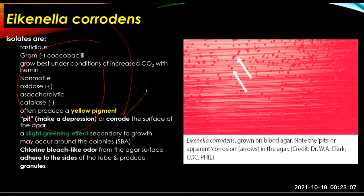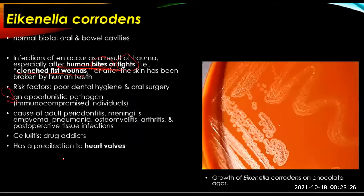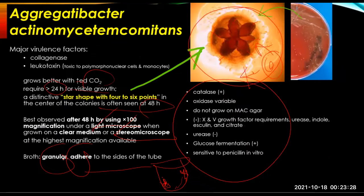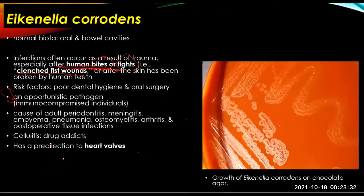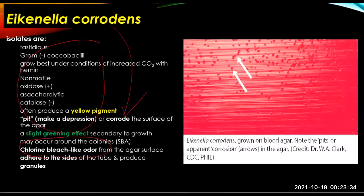A slight greening effect secondary to growth may occur around colonies on SBA. Another board exam question to remember: a chlorine bleach-like odor from the agar surface. It might adhere to the sides of the tube and produce granules, similar to Aggregatibacter actinomycetemcomitans.